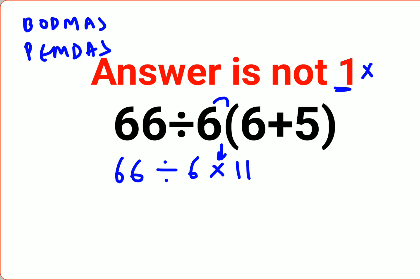Now here, please understand, a lot of people think this can be done as 66 divided by 6 into 11 is 66 and that is why they got the answer as 1. That is absolutely incorrect.